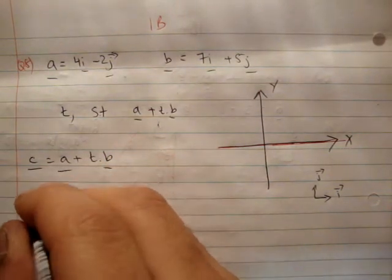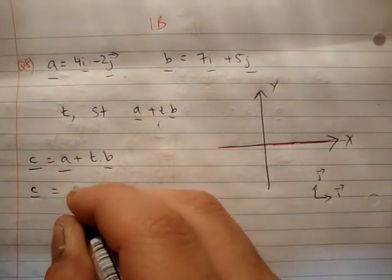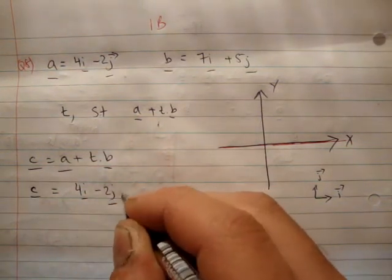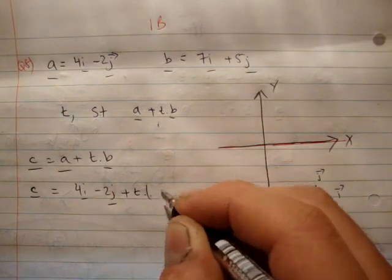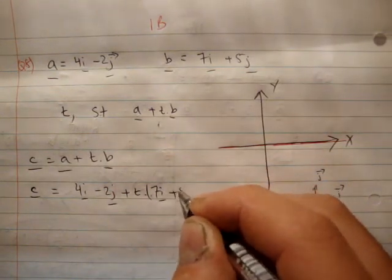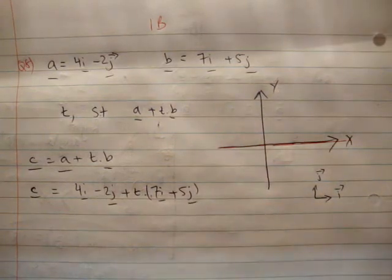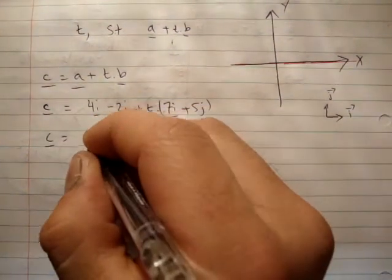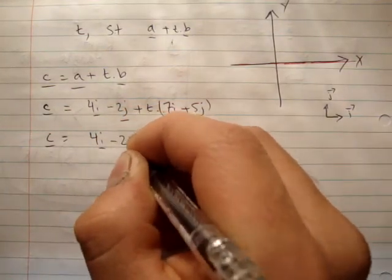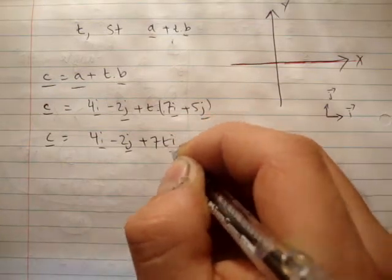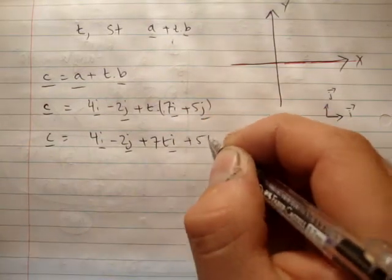Okay, so c is equal to 4i-hat minus 2j-hat plus t times 7i-hat plus 5j-hat. Alright? Therefore, the vector c is equal to what? 4i-hat minus 2j-hat plus 7ti-hat plus 5tj-hat.